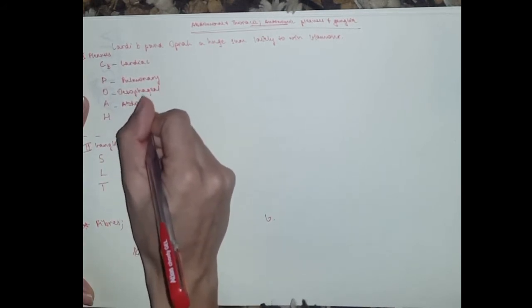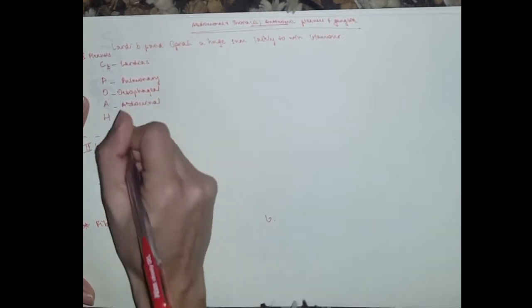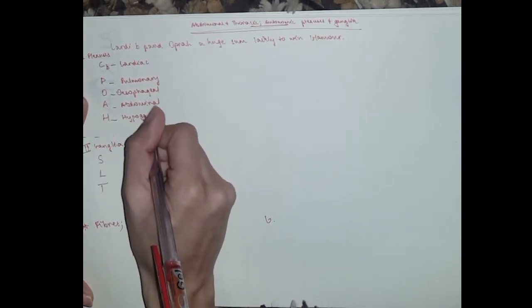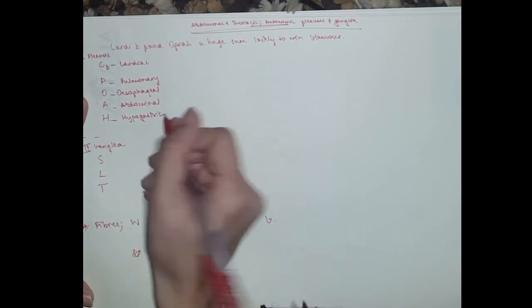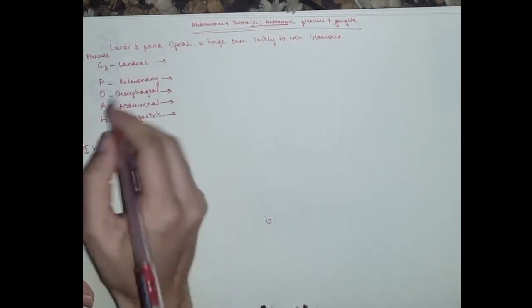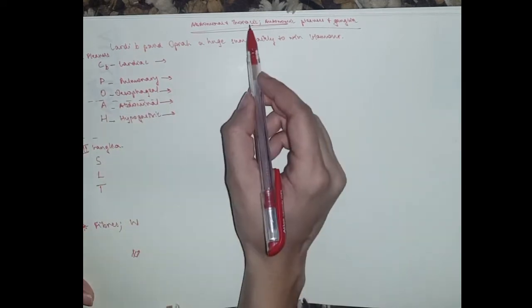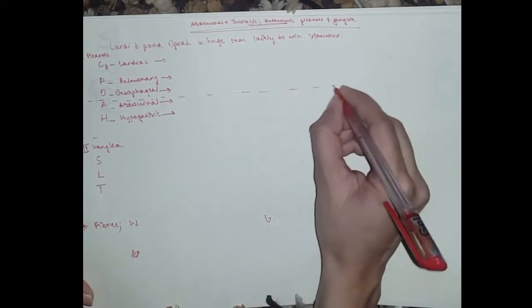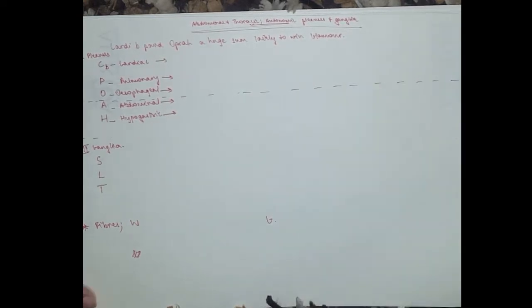O is esophageal, A is abdominal, and H is hypogastric plexus. And that's the division between the thoracic and the abdominal plexuses.